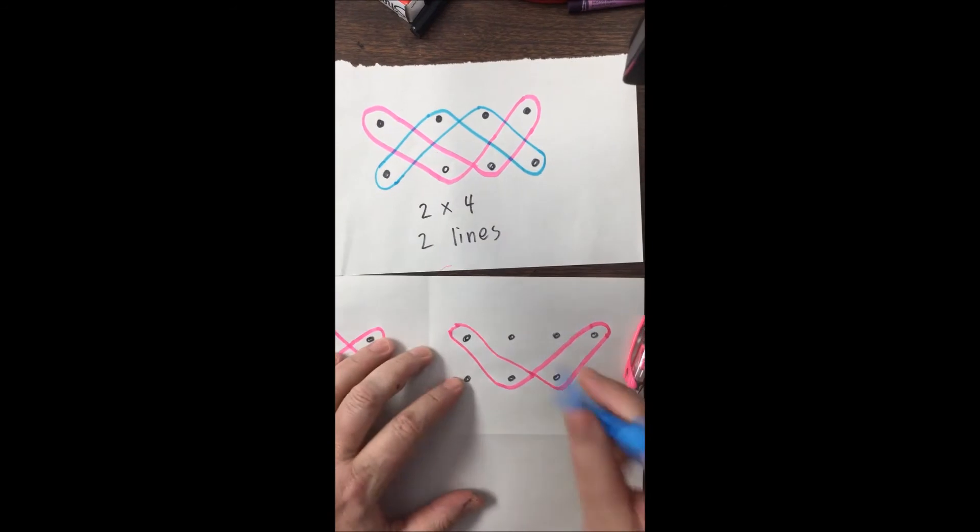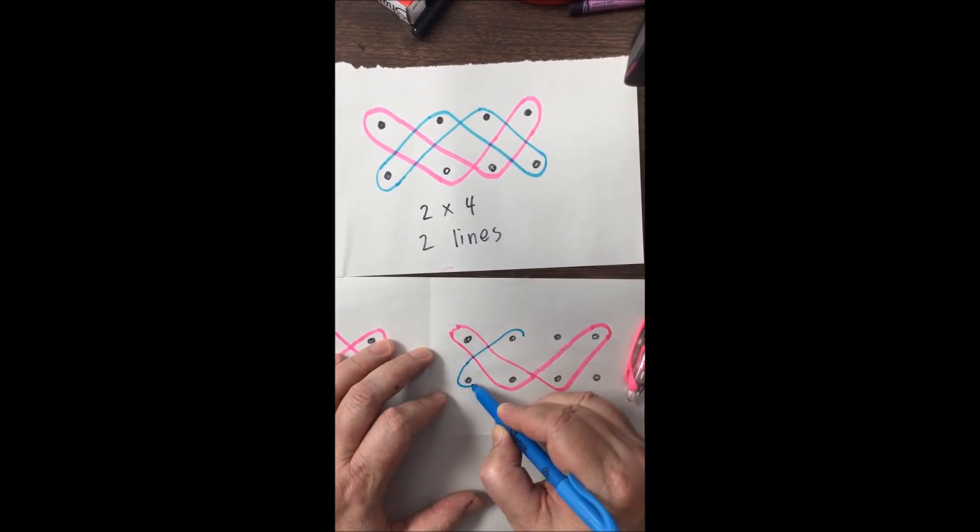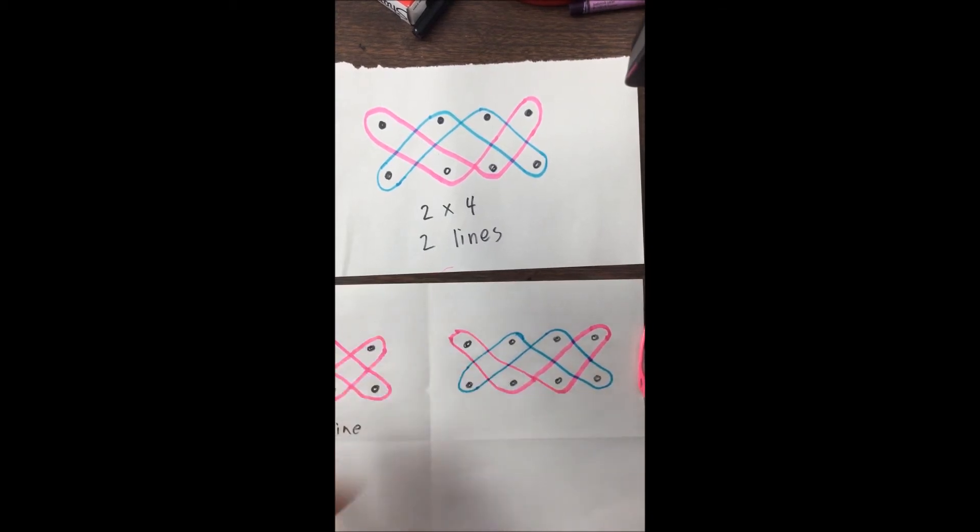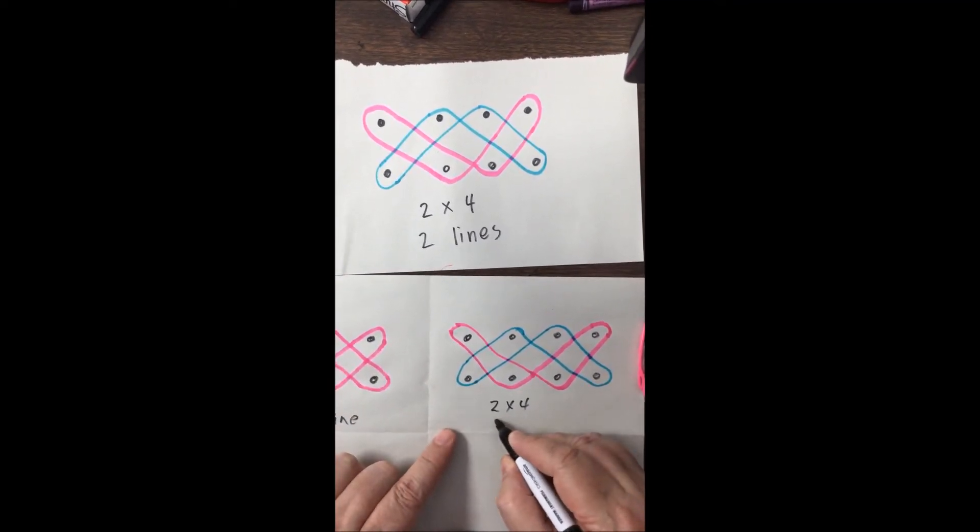You can start anywhere. I'm going to start here. This goes down, and then up over here, down around, and then back like that. That's a two by four. Two lines.